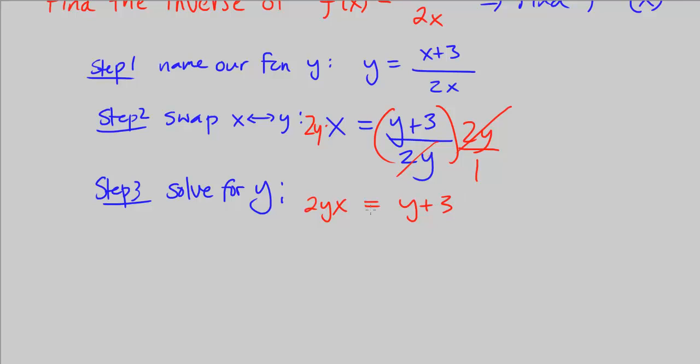Okay, and now to isolate y, we want all the y's together on one side of the equation. So let's go ahead and subtract y from both sides. So we get 2yx minus y equals 3, because these cancel out.